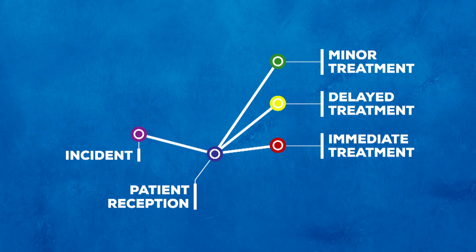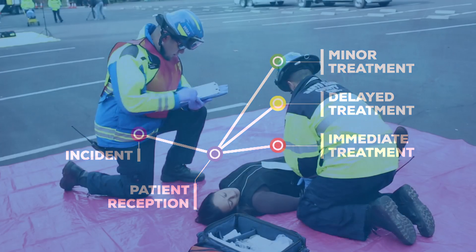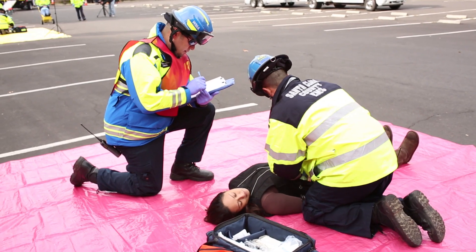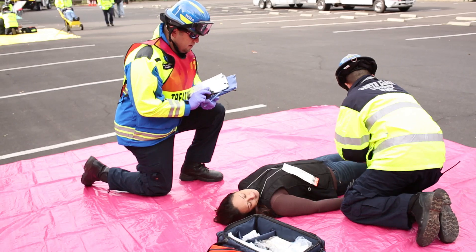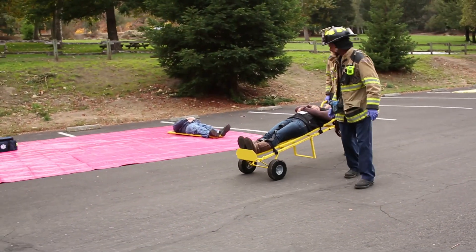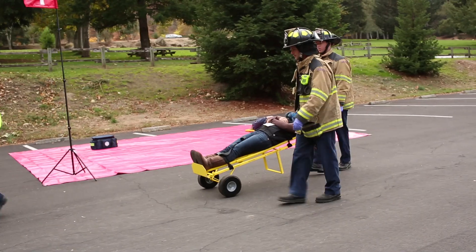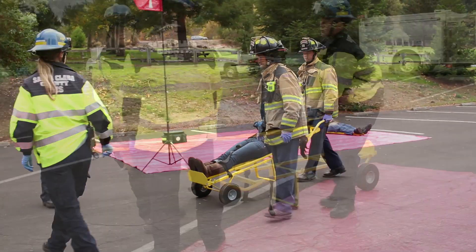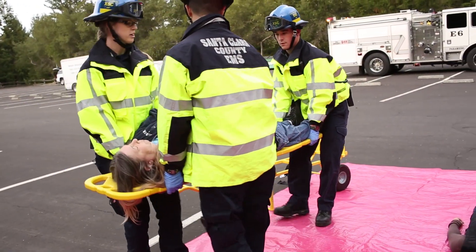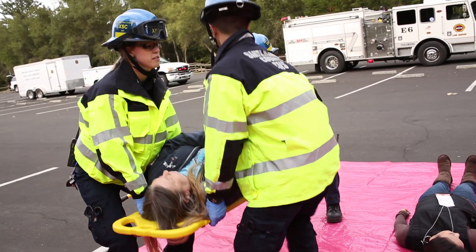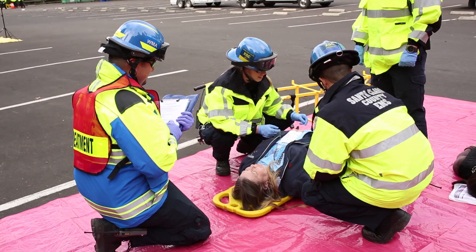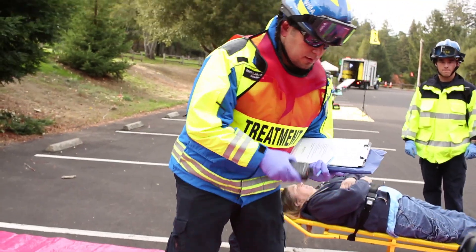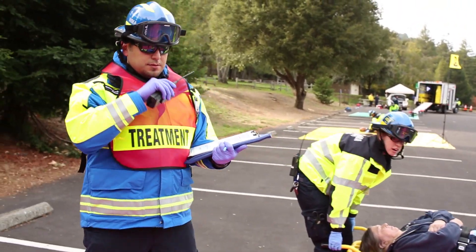The immediate treatment area is for the patients who are in most need of rapid transport to definitive care. Patients in the immediate area should not be there for long, and staffing should always be adequate to facilitate not just patient care, but also safe and expeditious patient loading to the transport area. This area is most likely to need ALS level personnel to treat those patients meeting immediate START criteria. Personnel working here must keep track of medical supplies and advise the treatment unit leader when levels are low.